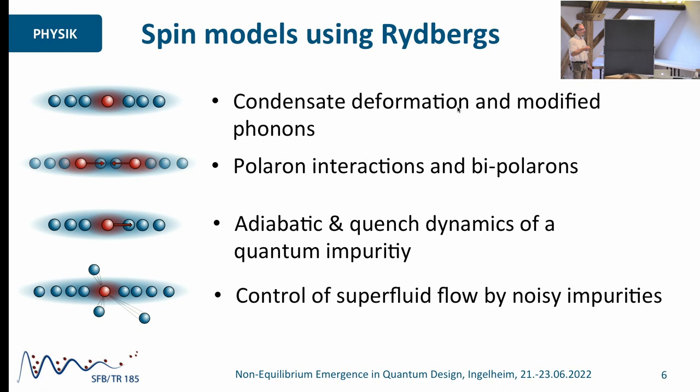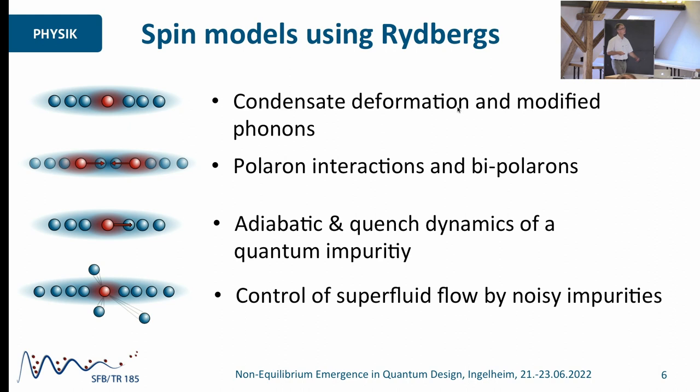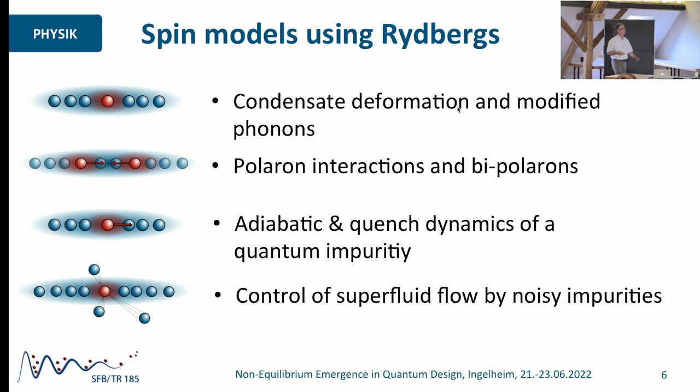We'll see that this is quite a rich dynamics. And finally, I want to discuss the situation where we take the coupling of the impurity to the condensate, not as a fixed value, but modulate it in time very fast and randomly — so we basically have a noisy impurity. I want to show you that using these noisy impurities, we can actually very nicely control superfluid flow in these one-dimensional condensates.